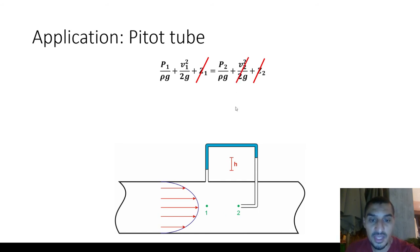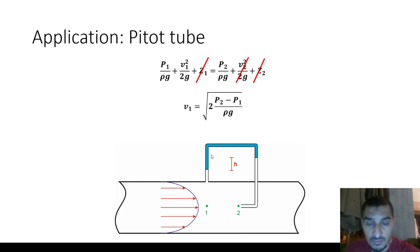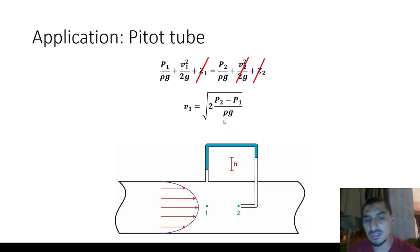By applying Bernoulli's equation between point one and point two, we can eliminate the z terms since both points are at the same height, and v2 equals zero. So we can calculate v1 based on the pressure difference, which comes from the difference in manometer height. The velocity is: v = √(2 × ΔP / ρ). Once you have the pressure difference and fluid density, you can calculate velocity immediately.